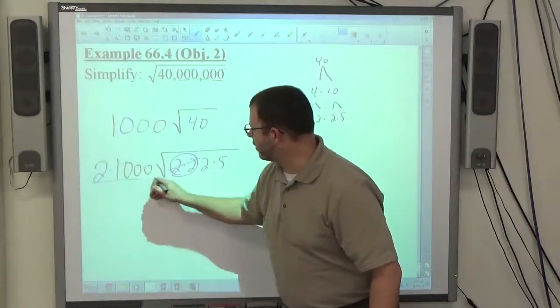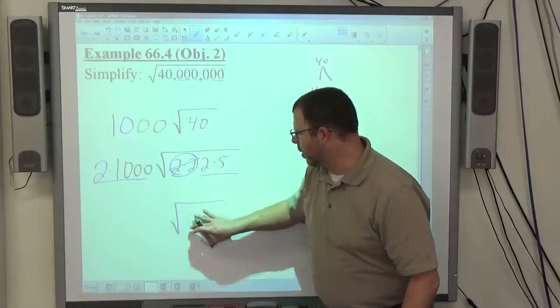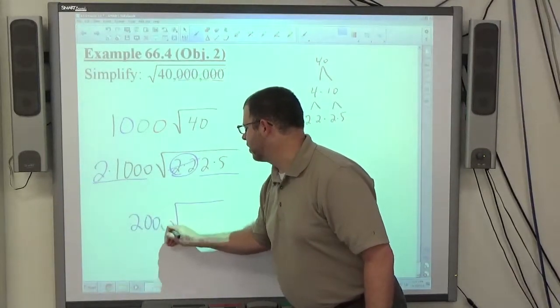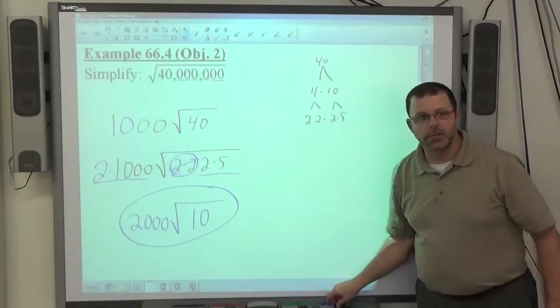So, I'm left with this product outside, this product inside, so I've got my square root structure, number, square root of number. 2 times 1,000 outside is 2,000. 2 times 5 inside is 10. 2,000 times the square root of 10 is the end result.